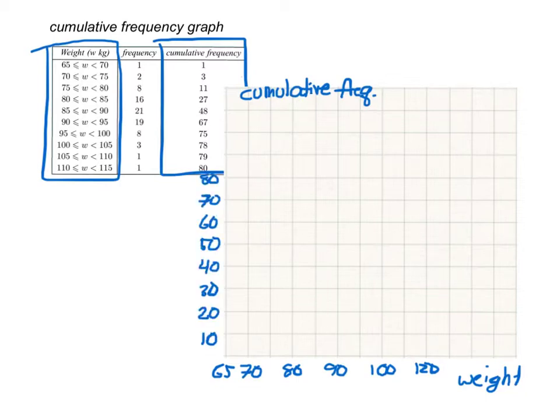Now, this is very important. I'm always going to start at 0 cumulative frequency. And that is going to correspond to the left-hand value in the first class interval, which again is 65. I can then use the right-hand value in that interval to represent the first cumulative frequency, which in this case is 1. So I'm going to place a dot at 1. And then the next dot will be at 75, which corresponds to a cumulative frequency of 3. And then the next dot will be at 80, with a cumulative frequency of 11.